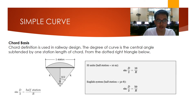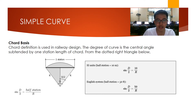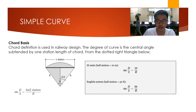For chord basis, used in railway design, the degree of curve is the central angle subtended by one station length of chord. From the right triangle shown, sine of D over 2 equals half-station over R. The half-station is 10 in SI units and 50 in the English system. So in SI units: sine D over 2 equals 10 over R. In the English system: sine D over 2 equals 50 over R.